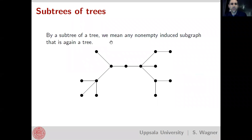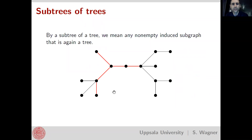When I say subtree of a tree, I mean any non-empty induced subgraph that is again a tree. What I've indicated in red is a subtree of the larger black tree. This particular subtree has a total of six vertices. We will count subtrees by their sizes and then look at the average size of these subtrees.